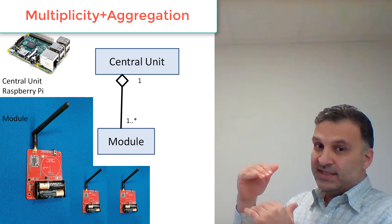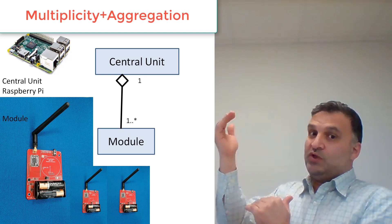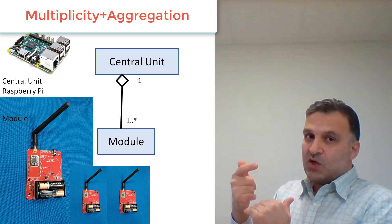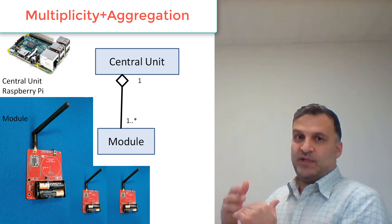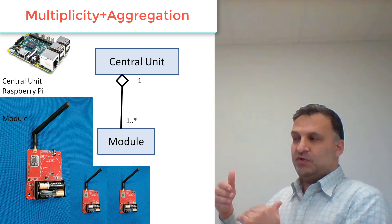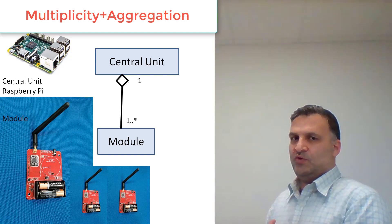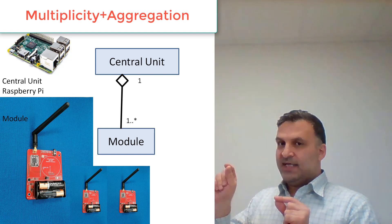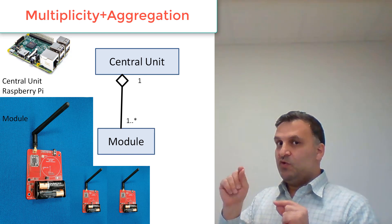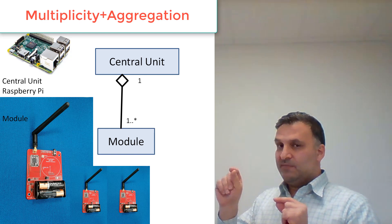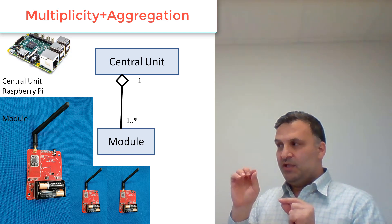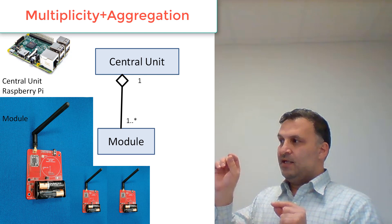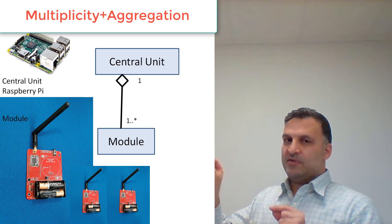The notation 1..* means one or more. So one central unit should be related to one or more modules, because we can place one, two, three, or four modules. Pay attention to this point and replay this part of the video multiple times if you did not understand how to place the multiplicity numbers.